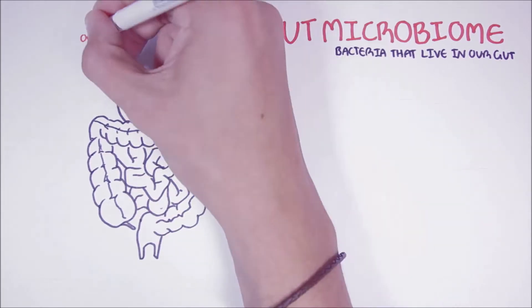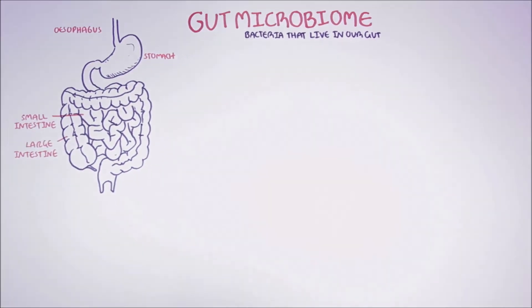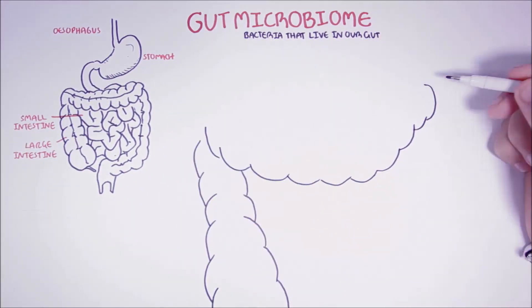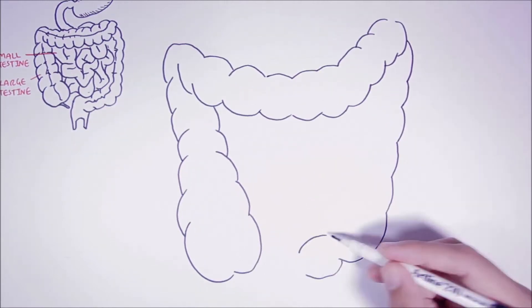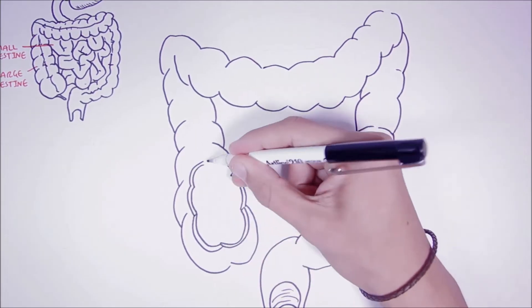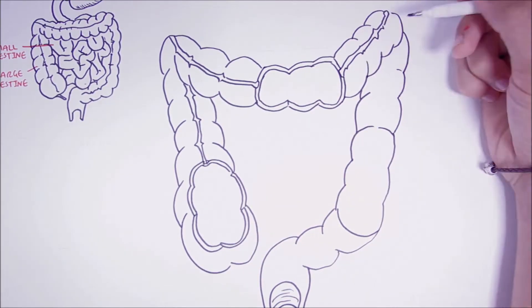So we begin here with the digestive tract. Looking at the digestive tract, which is made up of the esophagus, stomach, small intestine, and large intestine, these microorganisms are mostly found in the large intestine. Though it is important to understand that we do find these bacteria also in the small intestine, just not as much.